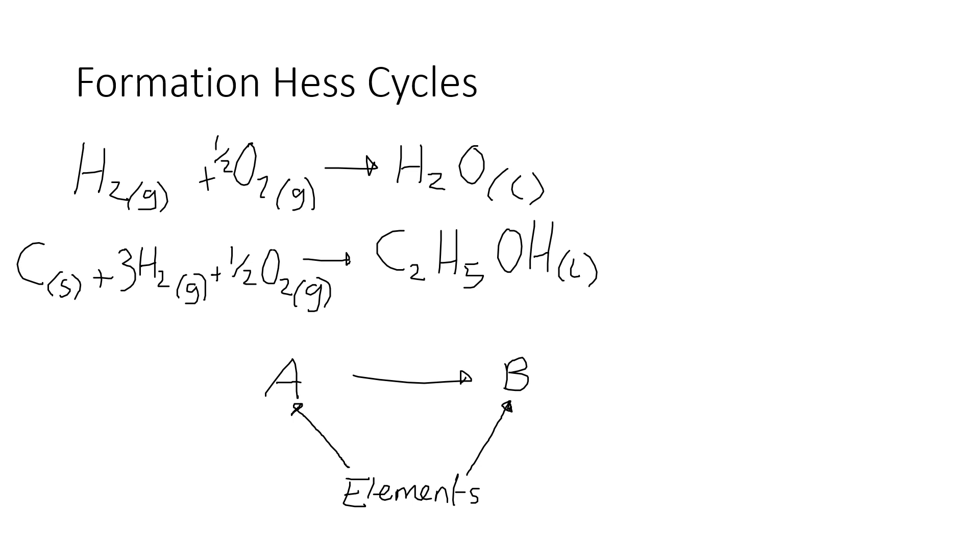This would be what we call an enthalpy of formation Hess cycle. If you wanted to work out arrow one but couldn't work it out directly, then you'd look up what arrow two is and what arrow three is, because you can find it from this data from these equations. The golden rule here is if you go against an arrow, you subtract it. And if you go with an arrow, you add it. So arrow one equals minus arrow two plus arrow three, or I'd rather say that arrow one equals three minus two. It's easier to write it out that way.